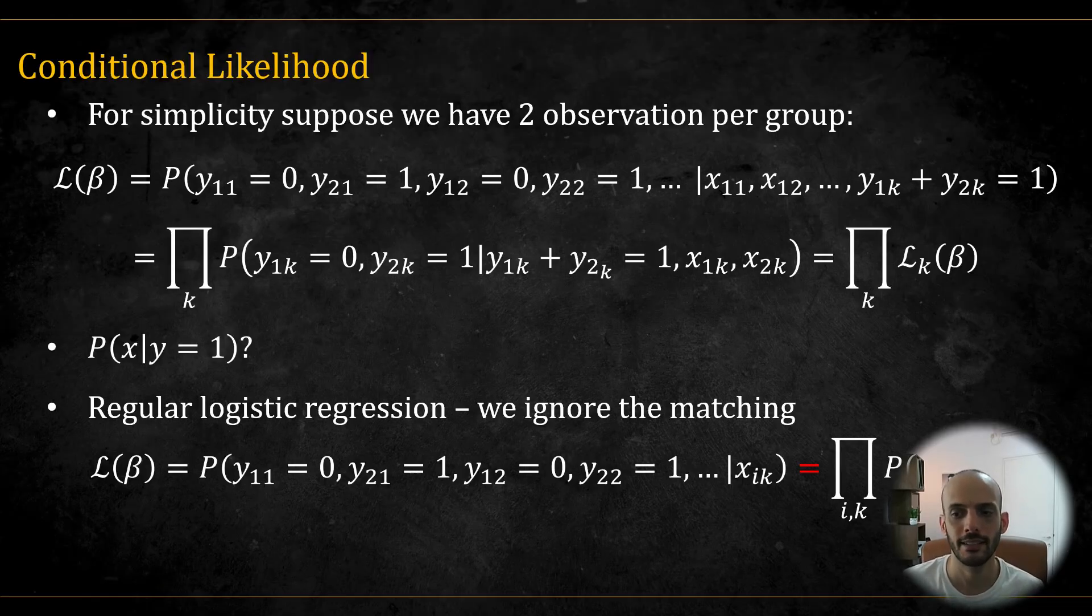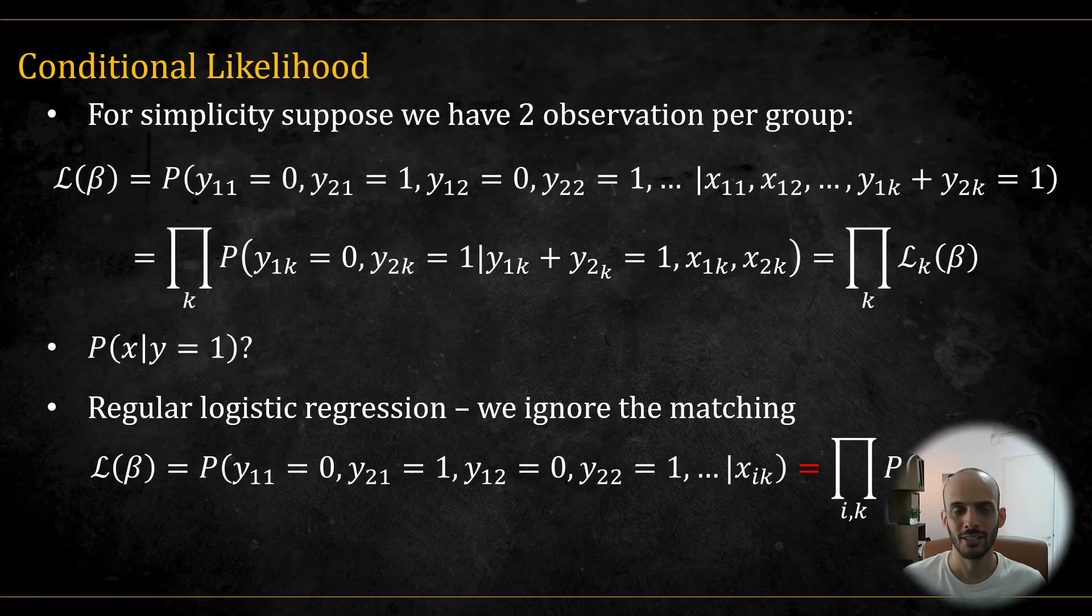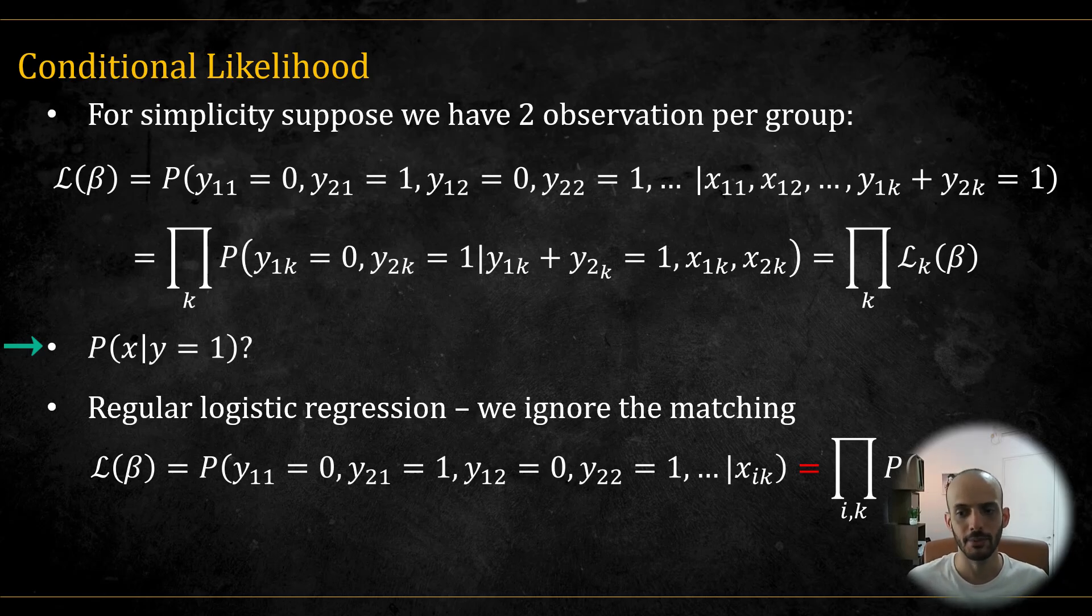Since each pair is independent of the others, we can factor the overall likelihood into the product of the strata level likelihood, that is, the likelihood for each group separately. Now, it's worth noting that in the Breslow and Associates paper, they use the notation of p(x given y), that is, the probability of x given y. Personally, I don't think it makes any sense. I don't agree with such notation. And also, I think what they really meant is what nowadays is usually denoted by p of y given x. And in any case, they immediately use Bayes' formula on these terms and immediately switch to p of y given x. I am going to use p of y given x from the start, which is more natural and I think more correct.